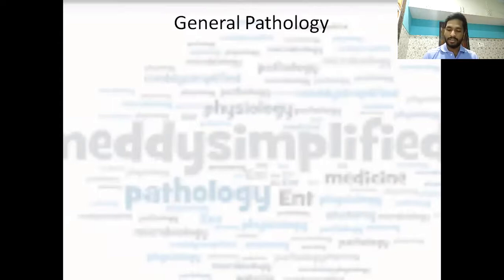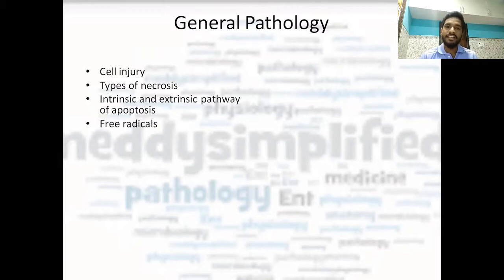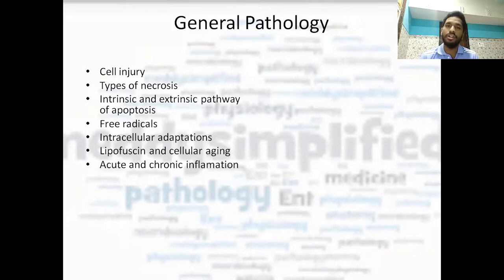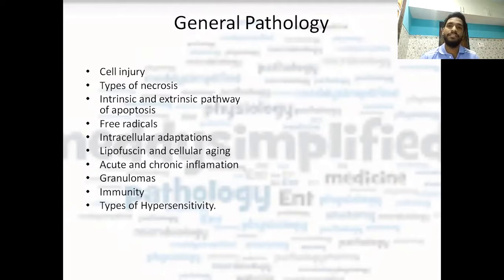Now in pathology, most questions are asked from general pathology itself. Cell injury as a whole topic is important, including types of necrosis, intrinsic and extrinsic pathways of apoptosis, pro-apoptotic and anti-apoptotic bodies, free radicals, intracellular adaptations, lipofuscin, and cellular aging. Acute and chronic inflammation as a whole topic, and granulomas in chronic inflammation — in which disease they are seen is asked every time: naked granuloma, stellate granuloma, etc. Immunity as a whole chapter is important — you can study it in pathology and also in microbiology. Types of hypersensitivity reactions: Type 1, 2, 3, 4 and Type 5, which is a subtype of Type 2 — very important to know.